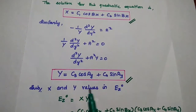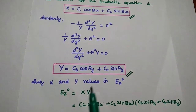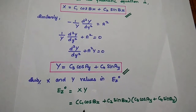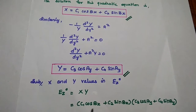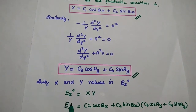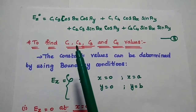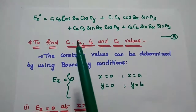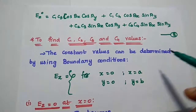Now we have obtained the X and Y components. We substitute these two values into the EZ naught term, which is the product of X and Y: (c1 cos bx + c2 sin bx) multiplied by (c3 cos ay + c4 sin ay). Multiplying all terms together, the EZ naught component becomes c1c3 cos bx cos ay + c1c4 cos bx sin ay + c2c3 sin bx cos ay + c2c4 sin bx sin ay. Consider this as the third equation — the general solution of the EZ component for TM waves.